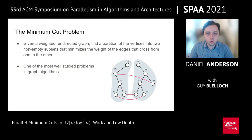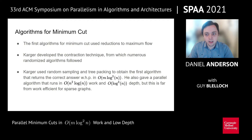There have been many algorithms for the minimum cut problem over the years. The first algorithms used reductions to maximum flow. Karger then developed a long line of work based on what he called the contraction technique, which led to several sequential and parallel algorithms. A big breakthrough was then given by Karger, who showed that random sampling and tree packing can be used to obtain an algorithm that returns the correct answer with high probability in m log cubed n time. He also used these same techniques to give a parallel algorithm that runs in n squared log n work and log cubed n depth.